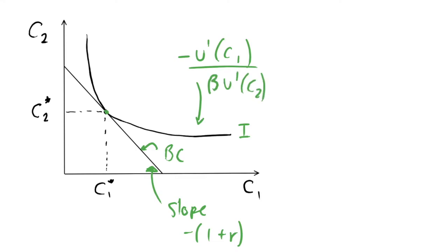The MRS is written as u′(c1) divided by β · u′(c2). It measures the amount by which we have to change consumption in order to keep an individual indifferent between two consumption bundles across different periods. In other words: if we decrease c1, how much do we have to increase c2 to keep this consumer equally happy? That's what an indifference curve measures — all combinations that keep us at the same utility level.